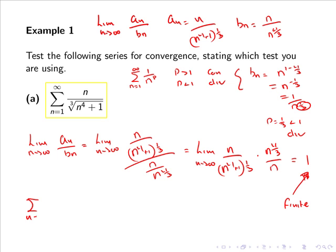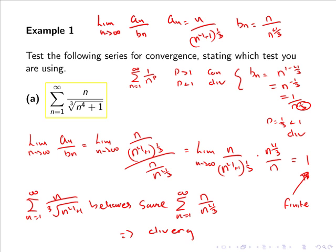So that means that the series from 1 to infinity of n all over the cubed root of n⁴ + 1 behaves the same as the series from 1 to infinity of n over n^(4/3). And as we found from the p-series, the series from 1 to infinity of n over n^(4/3) diverges, so that means our original series also diverges.